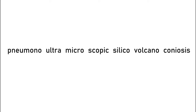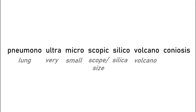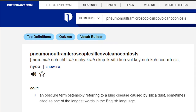If we understand that pneumono refers to lung, ultra to very, micro to small, scopic to either size or scope, silico refers to silica, volcano is volcano, and coniosis is a disease caused by dust, we can deduce that this word refers to a disease of the lung caused by specifically inhaling fine silica dust particles in volcanic ash.